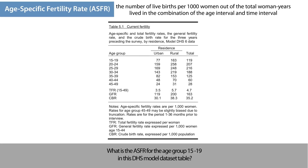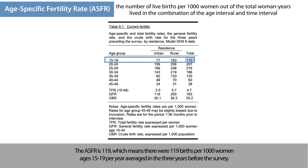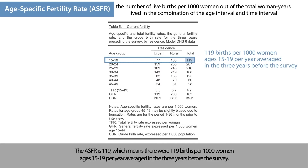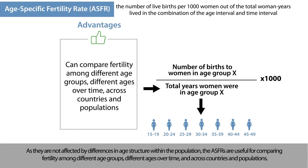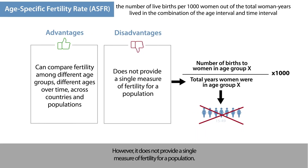What is the ASFR for the age group 15 to 19 in this DHS model dataset table? The ASFR is 119, which means there were 119 births per 1,000 women ages 15 to 19 per year, averaged in the three years before the survey. As they are not affected by differences in age structure within the population, ASFRs are useful for comparing fertility among different age groups, different ages over time, and across countries and populations. However, it does not provide a single measure of fertility for a population.